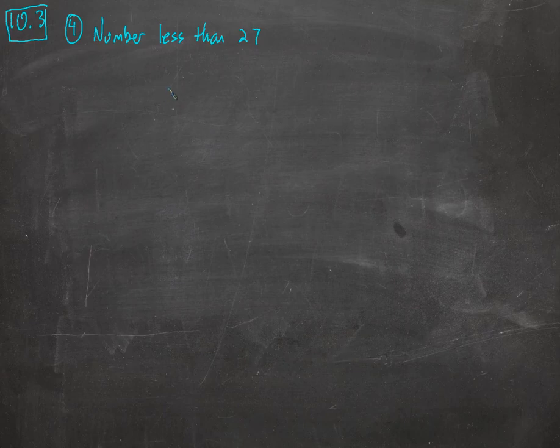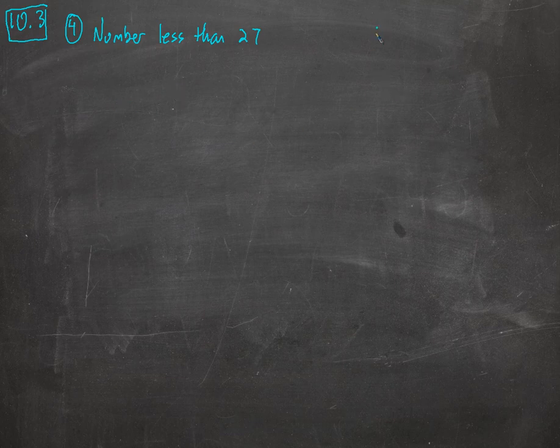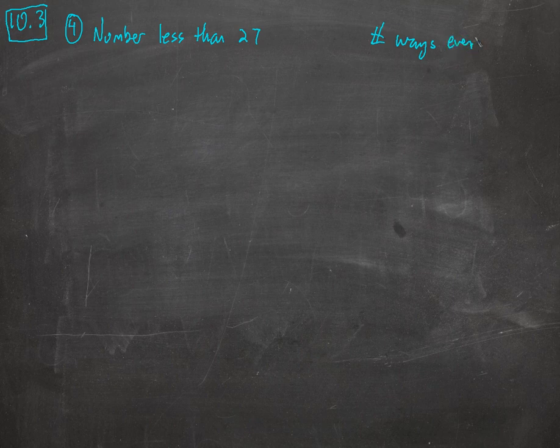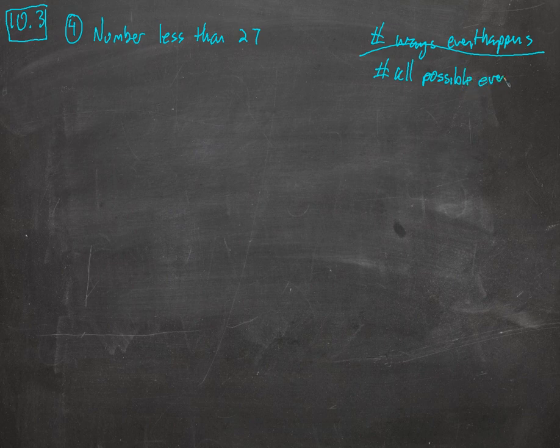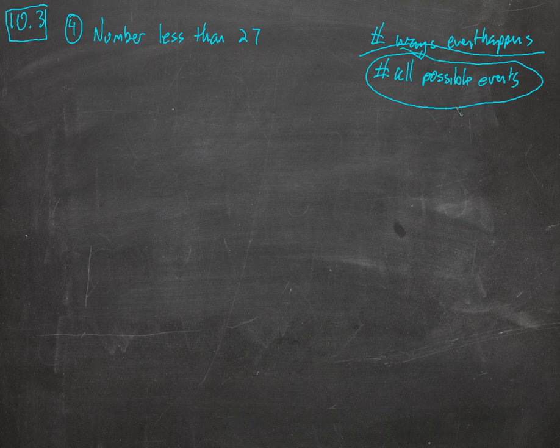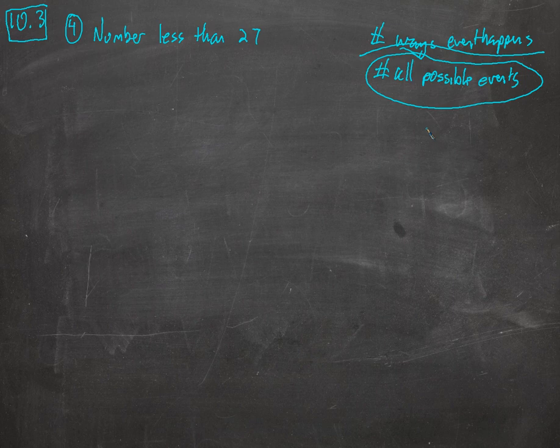Okay, this first one is just a straightforward probability question where we take the number of ways the event can happen over the number of all possible events. So this is going to be consistent through all of the problems in this little set, and it will be how many ways this thing can happen.